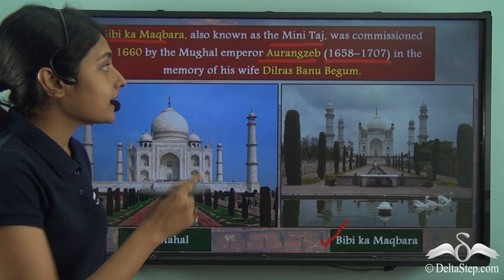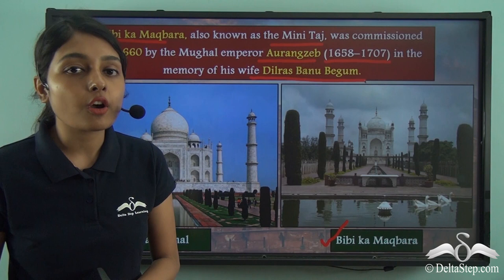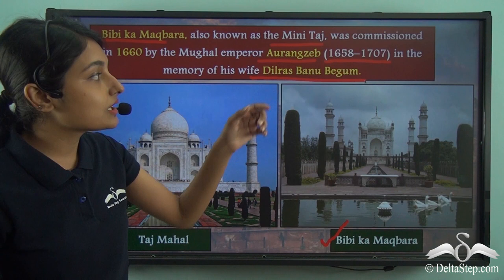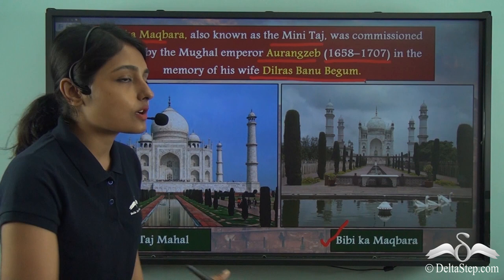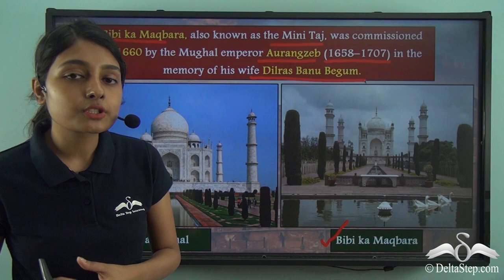But why was Bibi Ka Maqbara constructed? We know that Shah Jahan built the Taj Mahal in memory of his loving wife Mumtaz Mahal. Similarly, it was Aurangzeb who built the Bibi Ka Maqbara in memory of his wife Dilras Banu Begum. Now you must be questioning why these two mausoleums look so similar.